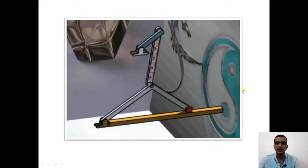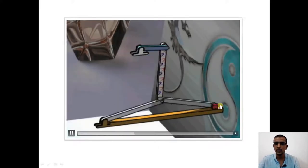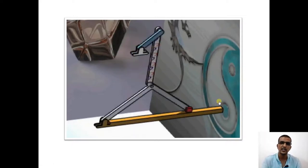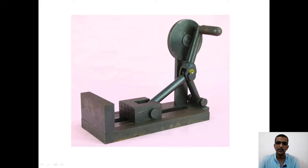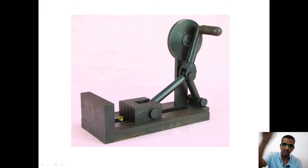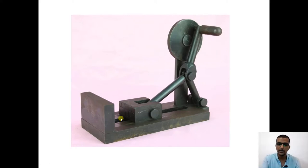Observe that the movement of the slider is as small as possible — it moves only by a small amount. This is a simulation of the actual toggle mechanism. The crank, link four which is fixed, link three pivoted at a point, crank number two, link five, and the slider are all visible. You can place the object in the gap, and with a small rotation of the crank by hand, you can shatter the stone into pieces.